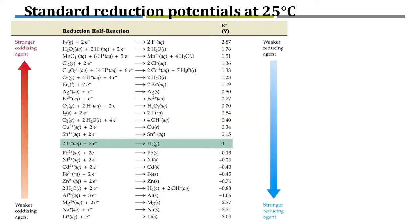The values of standard reduction potentials can be found in most general chemistry textbooks. In this particular table, the reduction potentials are ranked with the highest value on top and the lowest value below. Every reaction shown here is a reduction half-reaction — reduction means receiving electrons, so the reactant side shows plus some electrons.